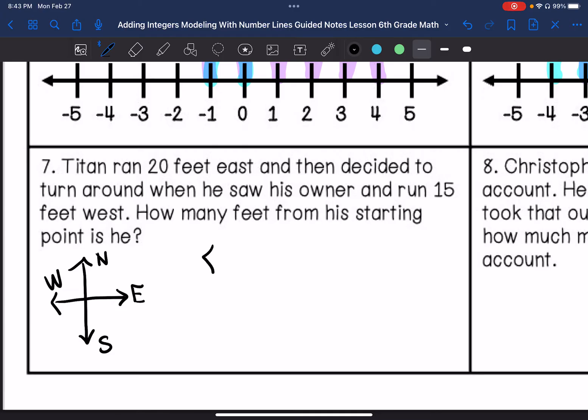I'm going to draw my makeshift number line. I'm going to probably count by fives. So he is going to go east 20 feet: 5, 10, 15, 20. Then I'm going to go 15 west: 5, 10, 15. So he ends up five feet from his starting point.